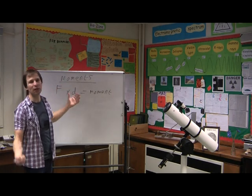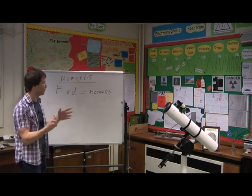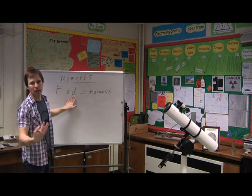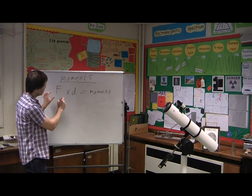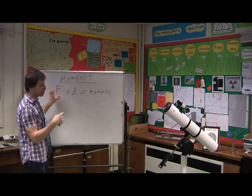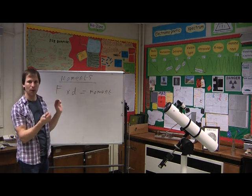F times D, force times distance. Well, what does that actually mean? Now, that D there is a special thing. It's actually displacement. And really what we're saying here is this is a force times a perpendicular distance from a point.